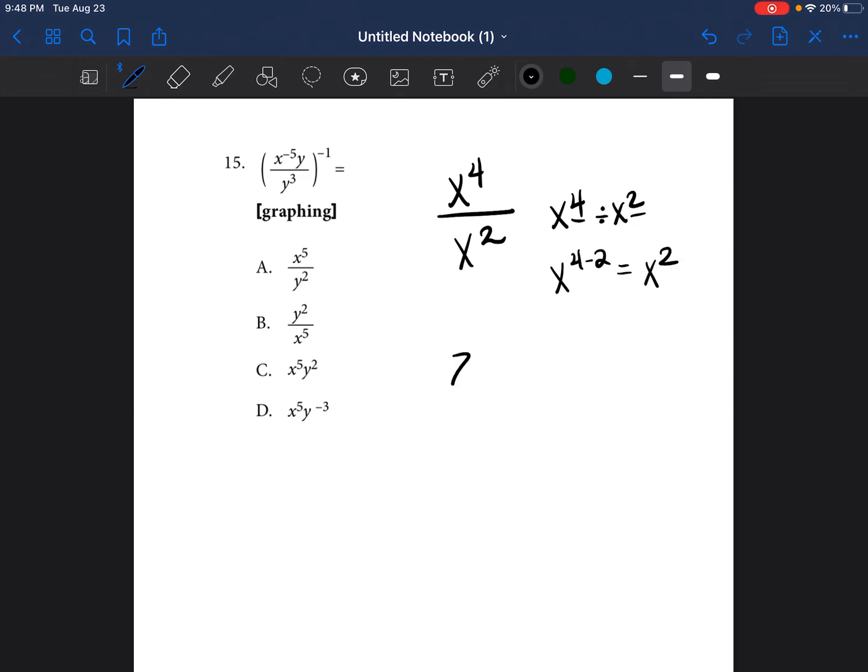I'll show you another example. If you have z to the tenth power divided by z to the third power, you would do z, 10 minus 3, and it would be z to the seventh power.